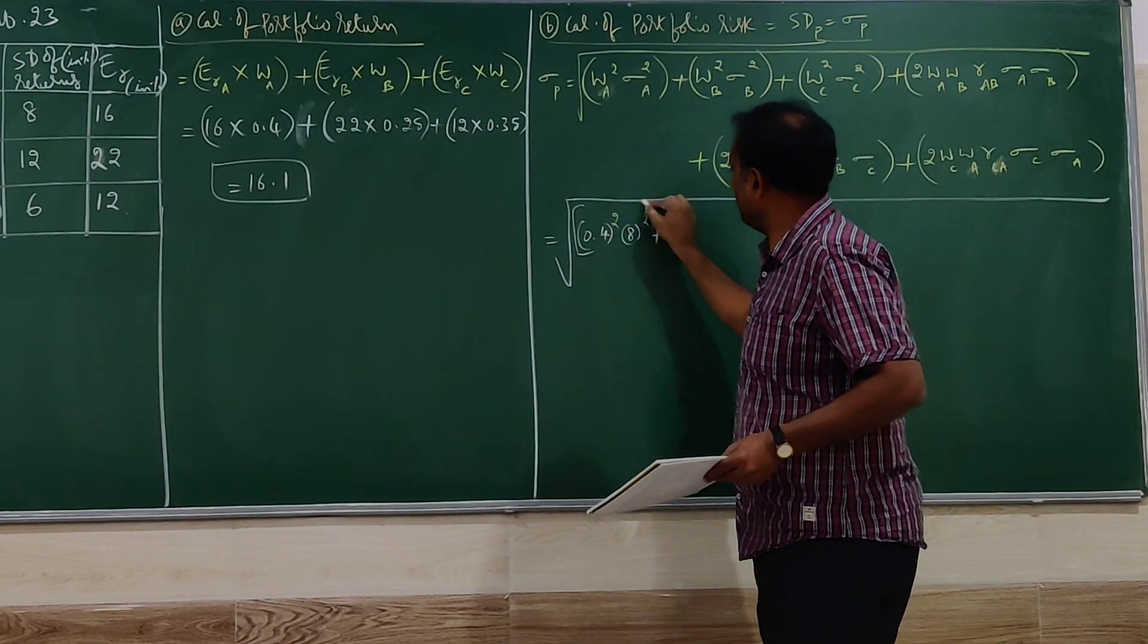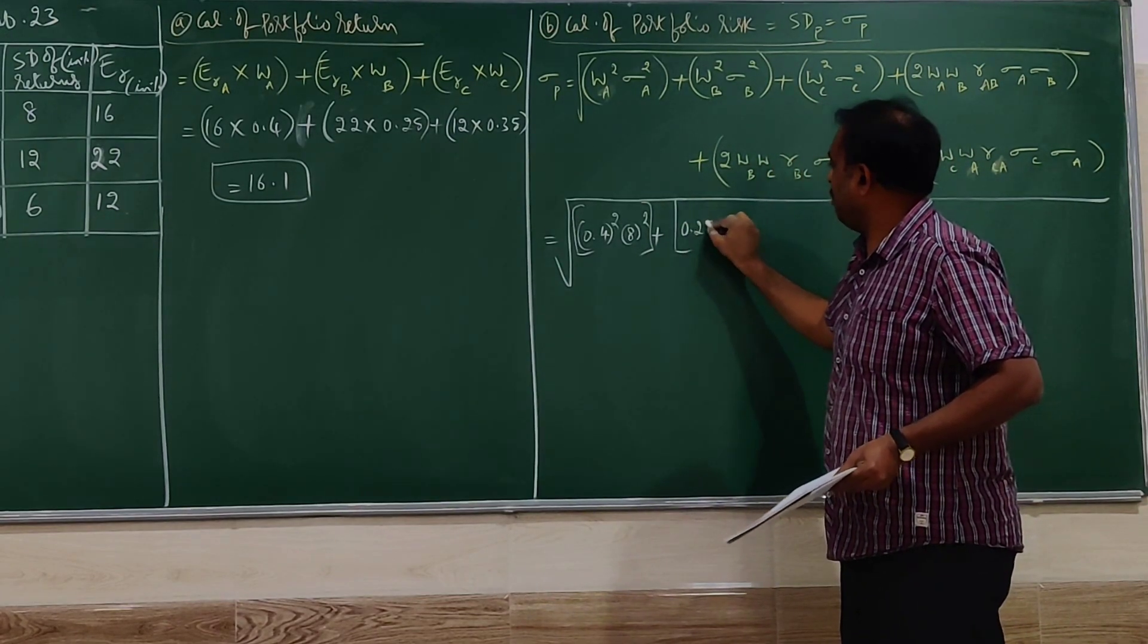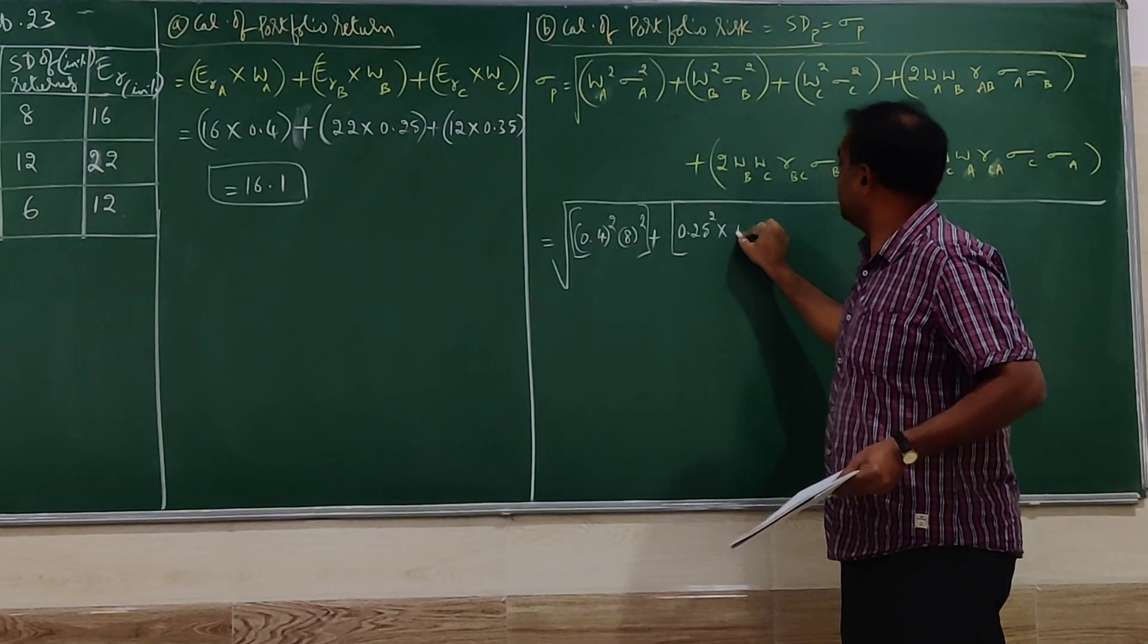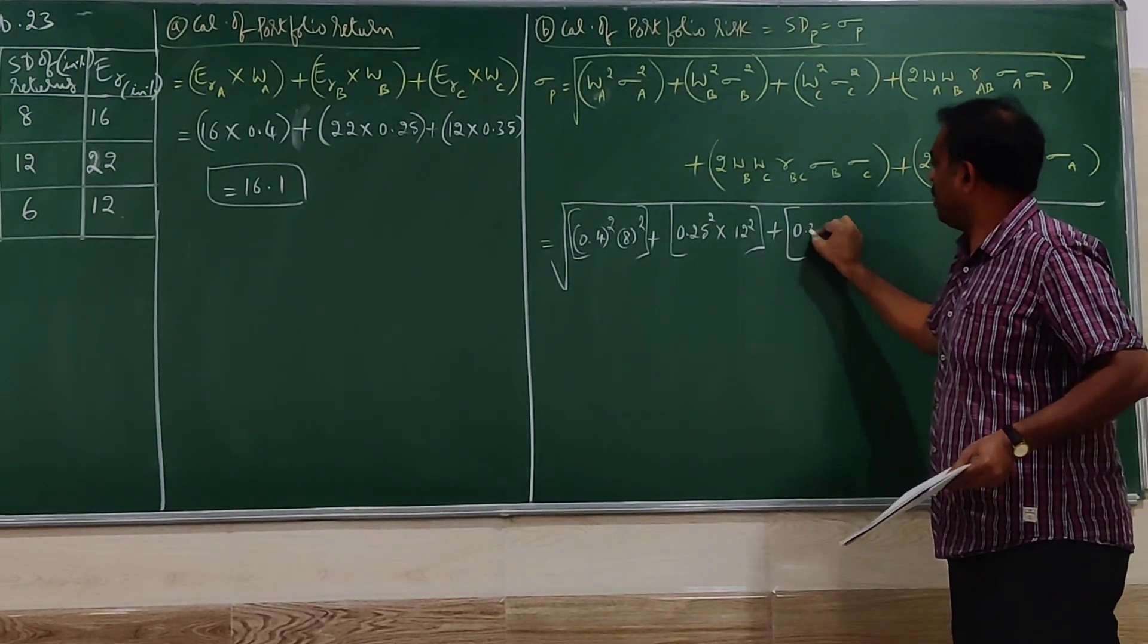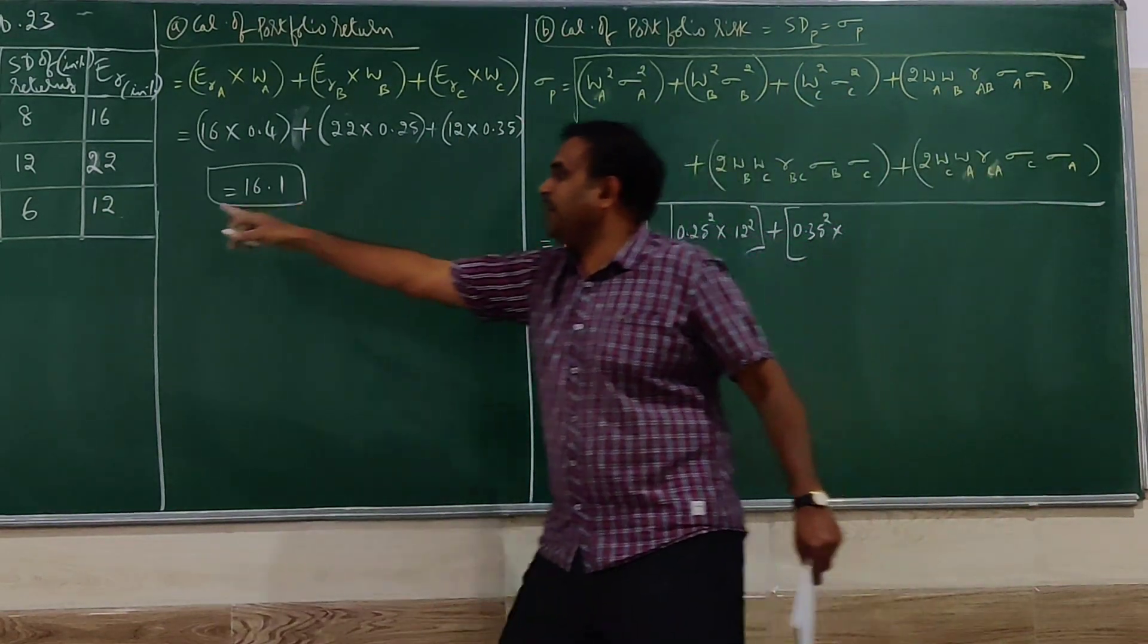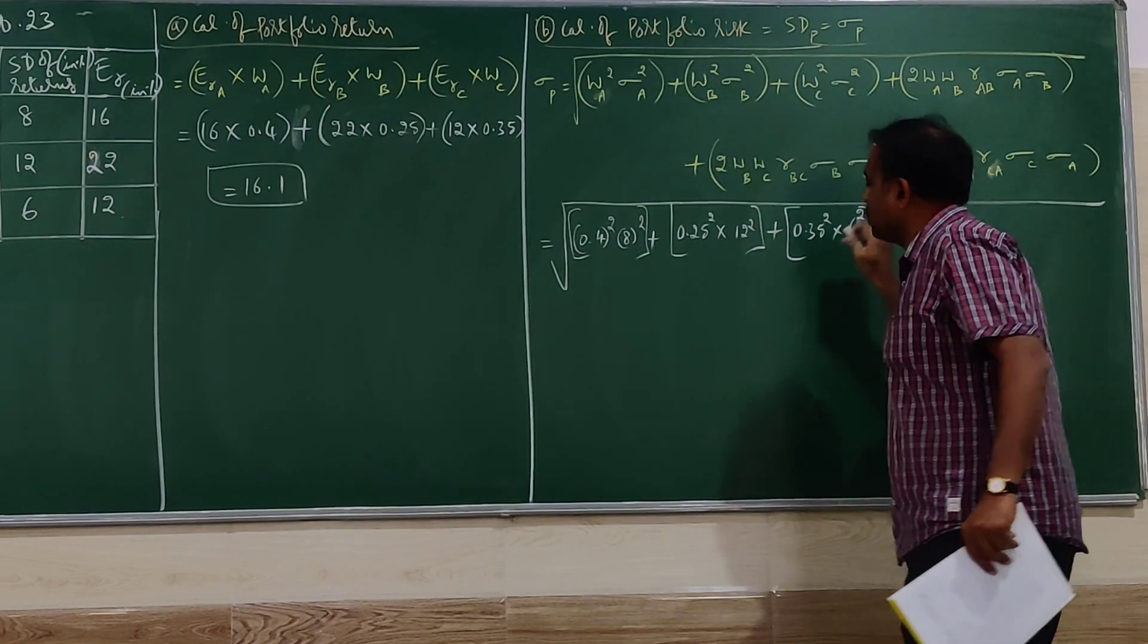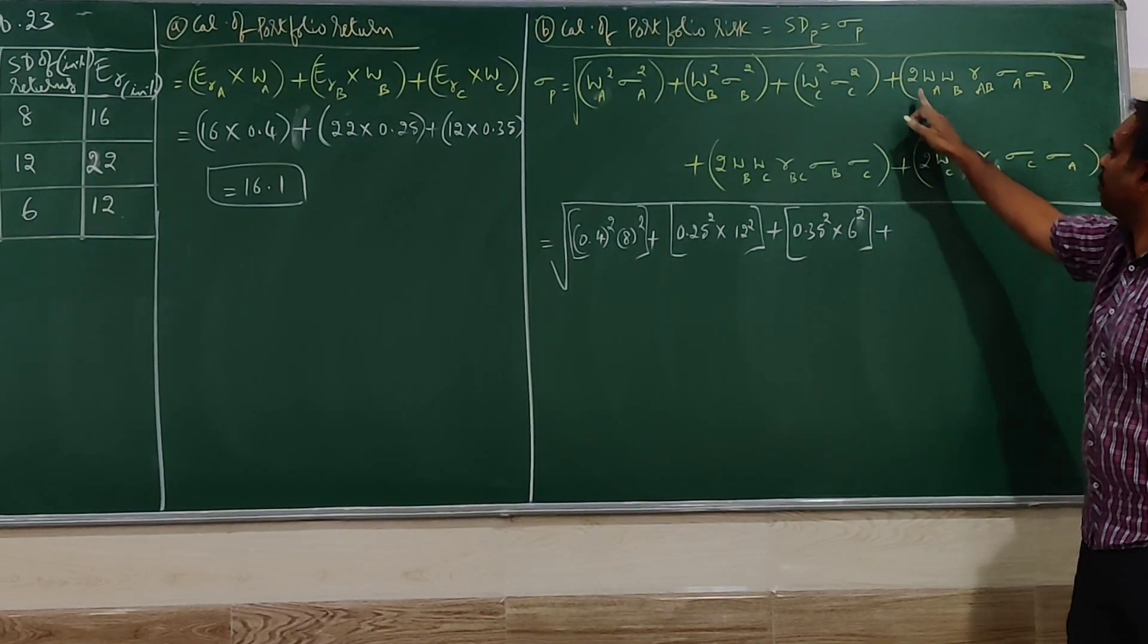This is one set. Then weight of the second part, then standard deviation. The third one weight is 0.35 squared multiplied by the standard deviation here, 6 squared. So if standard deviation is not there, we have to find. Here all the information is given, just the substitution is important.